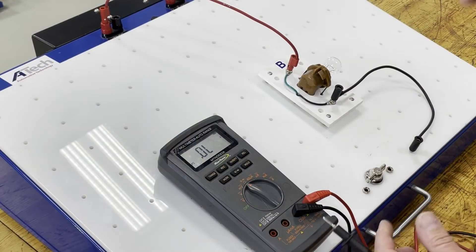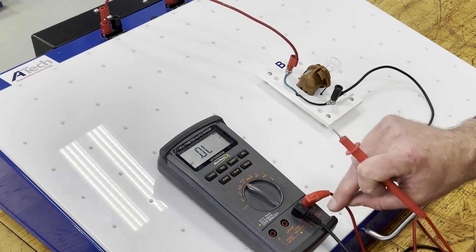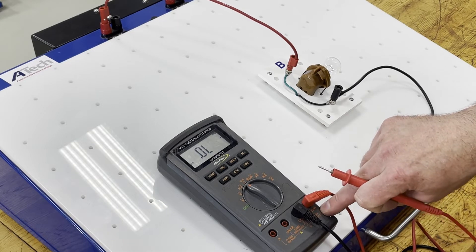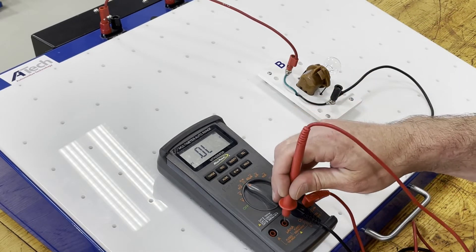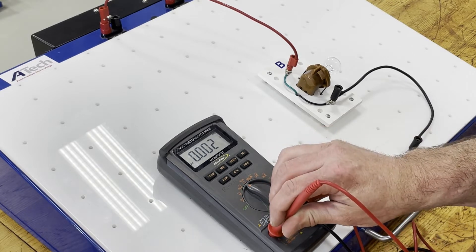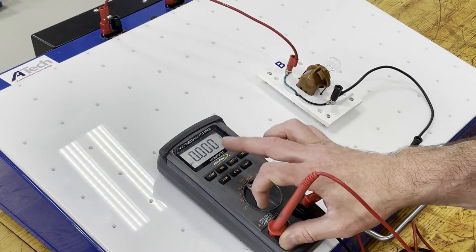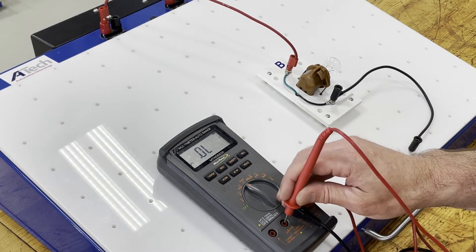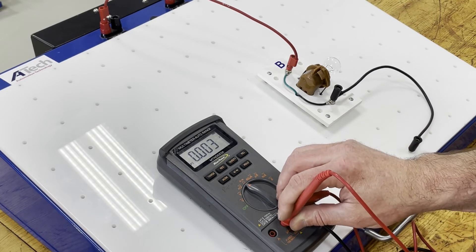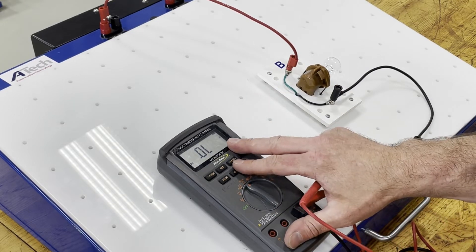I take my red lead with it plugged into the volt ohm port that also shares that diode symbol over here and I'm going to touch it in each of the leads of amps and milliamps. As long as my screen changes to some number, something other than OL, then that tells me the fuse inside the meter is good.